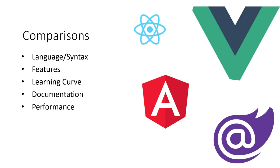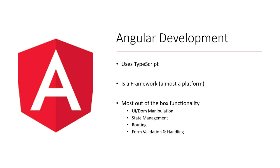Now we're going to get into the nitty gritty. The comparisons will cover language and syntax, features, how difficult the learning curve is, the documentation provided, and what kind of performance they offer. Starting with Angular: Angular uses TypeScript as the main language. It is a framework, but it's more of a platform — it's essentially all-inclusive, bundling everything together so you have access to more out-of-the-box functionality. Examples include UI DOM manipulation, state management, routing, form validations, and form handling. That's all included in the default Angular download without having to worry about external packages like you would with React or Vue.